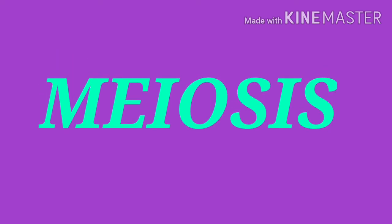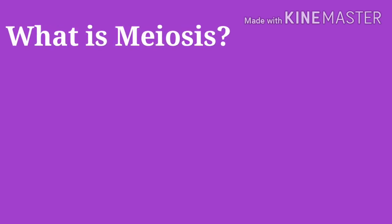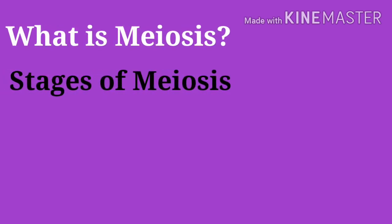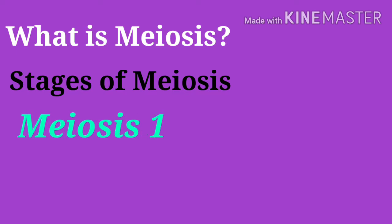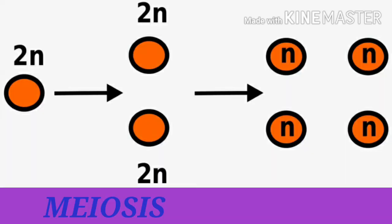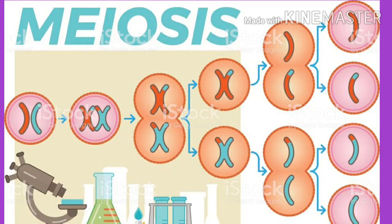In this video we are going to learn about meiosis: what is meiosis, stages of meiosis, meiosis 1 and meiosis 2. Meiosis produces genetically different types of cells. All four daughter cells produced by meiosis are genetically different from each other.